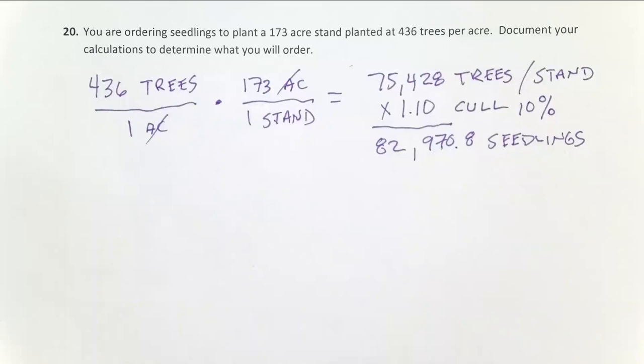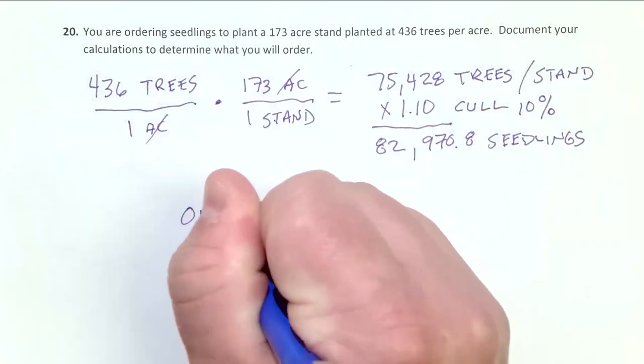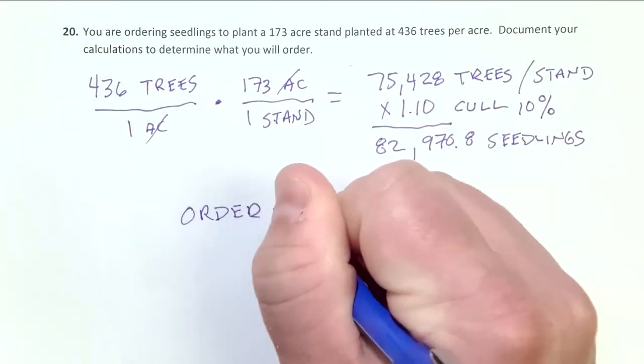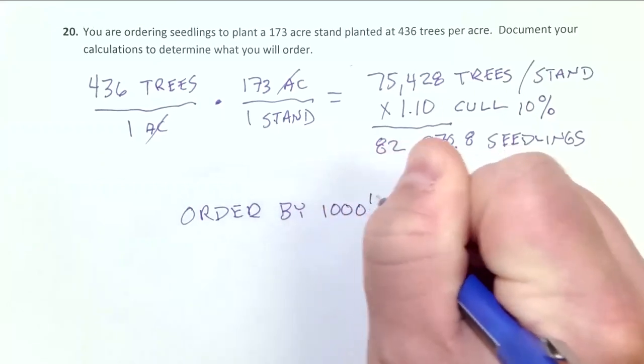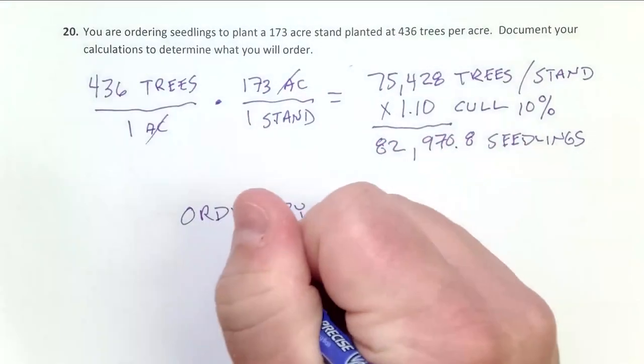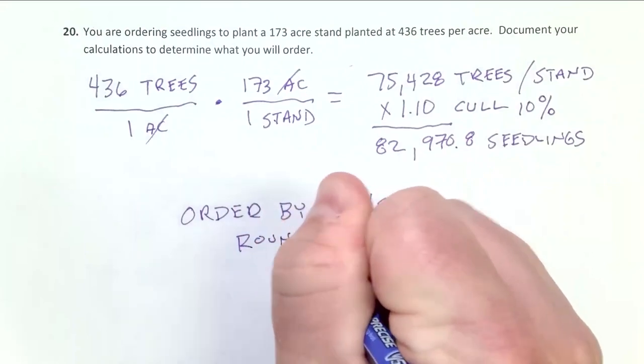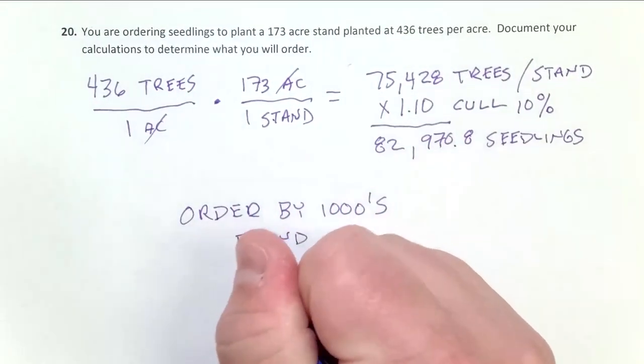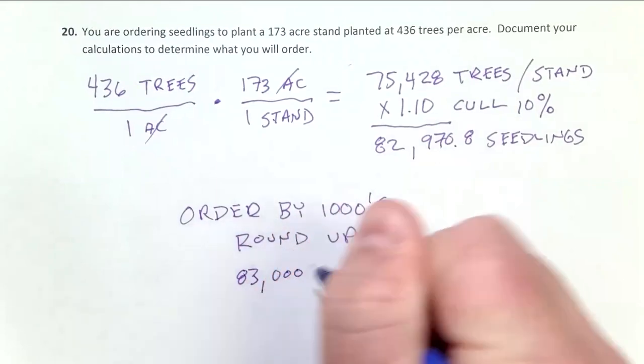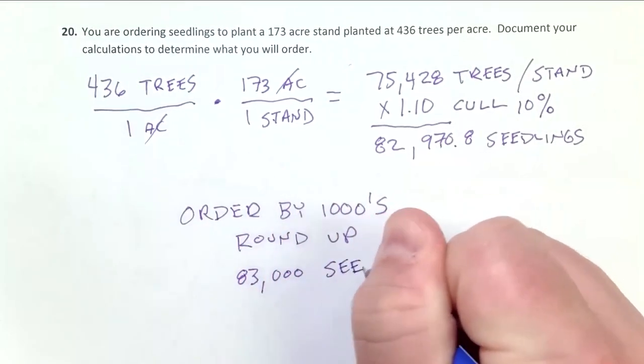And so our final step to get the correct answer, we will always round up. Even if this was 82,001, we would go ahead and round up just to build in a few more seedlings over there. So we want to order seedlings by 1,000, thousands for large orders. So we round up. And that means we round 82,970 up. We need to order 83,000 seedlings from the nursery for this particular stand.